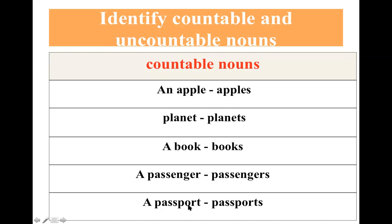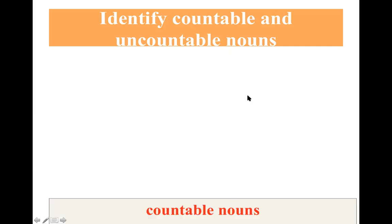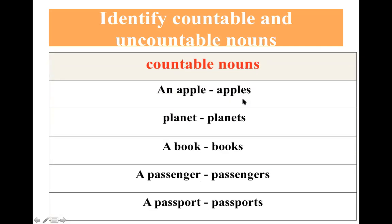A passport — một quyển hộ chiếu, và nhiều quyển hộ chiếu là passports. Danh từ đếm được là những danh từ ở dạng số ít và dạng số nhiều — chúng ta có thể thêm S vào. Đó là countable nouns. Vậy còn uncountable nouns nghĩa là gì?